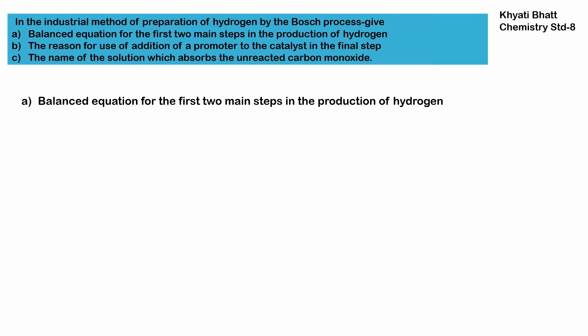The question is about the industrial method of preparation of hydrogen by the Bosch process. We have to write balanced equations for the first two main steps in the production of hydrogen, explain the reason for addition of a promoter along with the catalyst in the final step, and name the solution which absorbs the unreacted carbon monoxide.